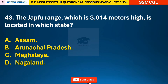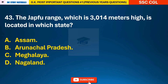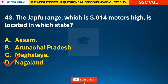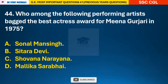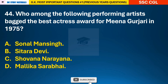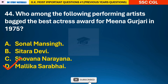Question 43: The Japfu range, which is 3014 meters high, is located in which state? — answer D: it is in the state of Nagaland. Question 44: Who among the following performing artists bagged the best actress award for Meena Gurjari in 1975? — answer D: Mallika Sarabhai.